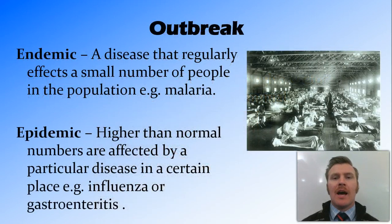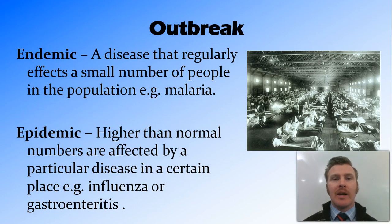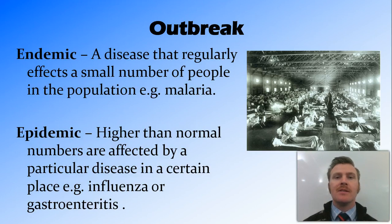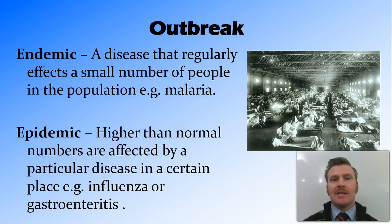We're now going to look at a few words we can use to classify an outbreak of disease. The first and lowest level is endemic — a disease that regularly affects a small number of people in a particular area. For example, malaria is endemic to a number of tropical countries. An epidemic is an increase in that normal number, when the numbers become more than usual.